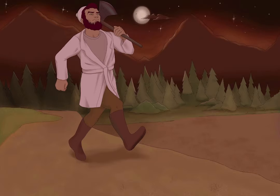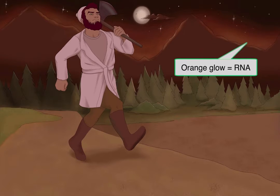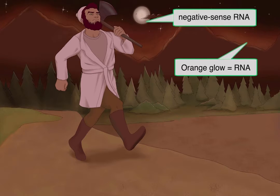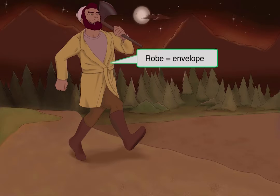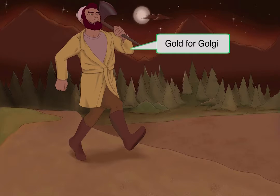The Bunyaviruses are a family of single-stranded RNA negatives. The mountains in the back give off a warm orange glow to remind you that it's an RNA virus, and the nighttime scene with our negative-sense moon tells you that it's a negative-sense virus. Bunyavirus is also an enveloped virus — you can remember this by looking at Paul Bunyan's nice golden robe that's enveloping him. Something that sets Bunya apart from the other enveloped viruses is that it obtains its envelope from the Golgi body complex of host cells, and that's why his coat is the color gold — gold for Golgi.